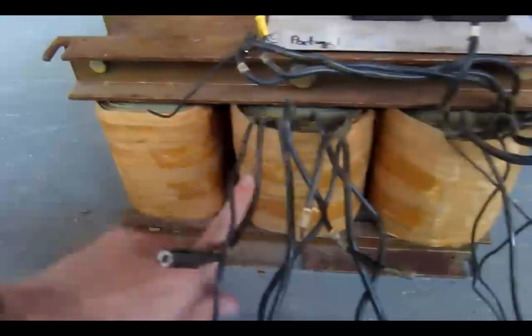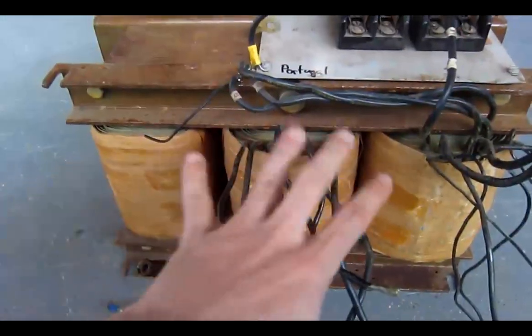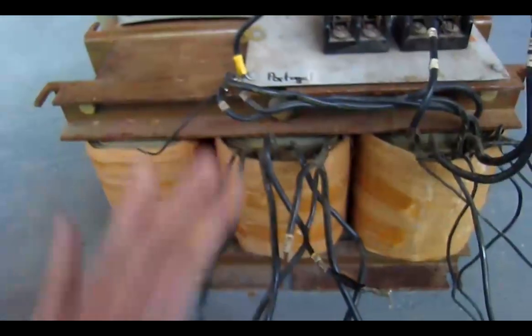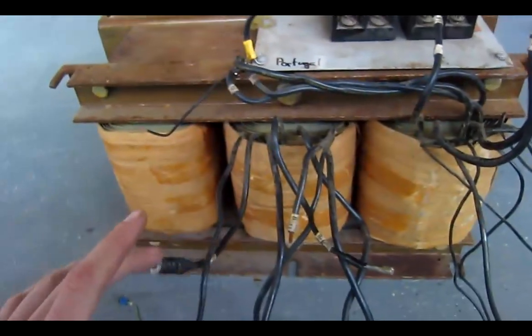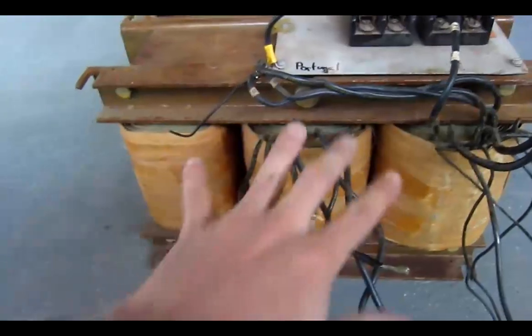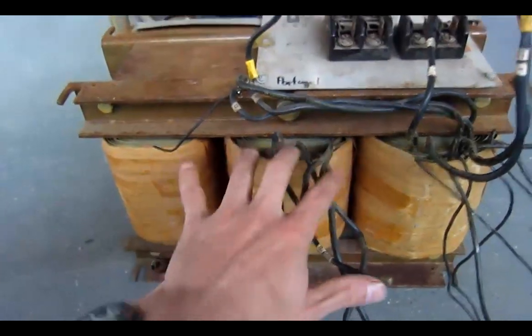They only come out of two of the three cores. Now this is designed to be hooked up for a three-phase system and it feeds into a three-phase transformer. So what I'm thinking is that this is actually inductive current limiting and metering.